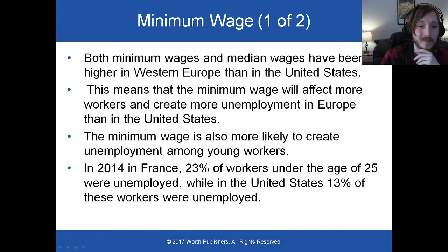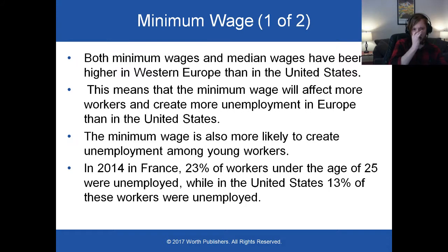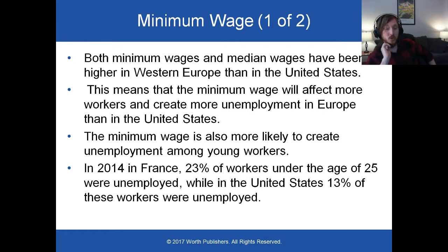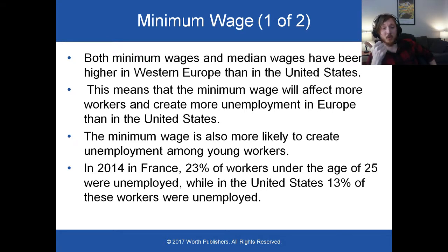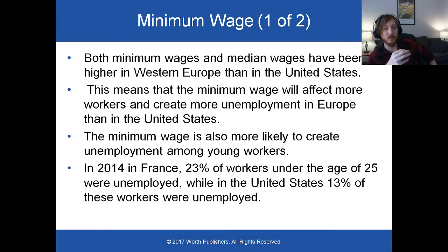Let's start with the minimum wage. A minimum wage is higher in Europe than the United States, and so is the median wage — the average wage in Western Europe. But recall chapters three and four: what happens when there is a higher wage, perhaps higher than an equilibrium wage for low-skilled workers? There should be a surplus of labor. A surplus is more supply than demand. In unemployment, a surplus is people who want to work but can't — which is how we define unemployment. So the minimum wage creates more unemployment.